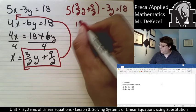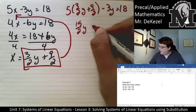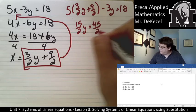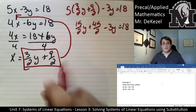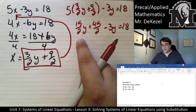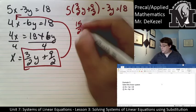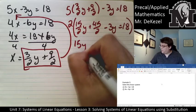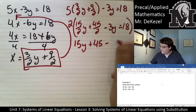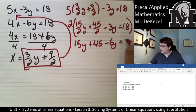This would be 15/2 y plus 45/2 minus 3y equals 18. I'm going to get rid of the fractions by multiplying everything by 2. I'll be left with 15y plus 45 minus 6y equals 36.